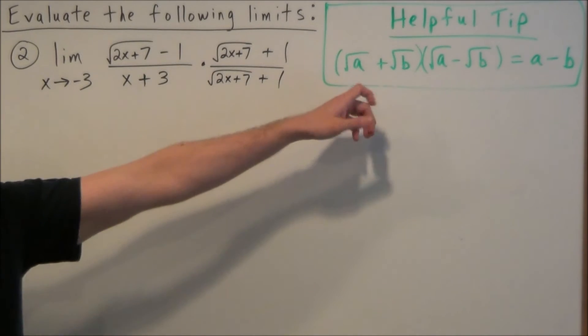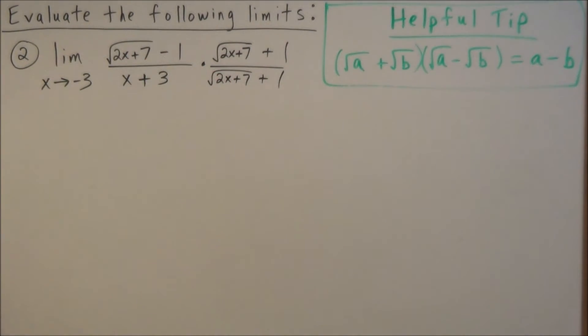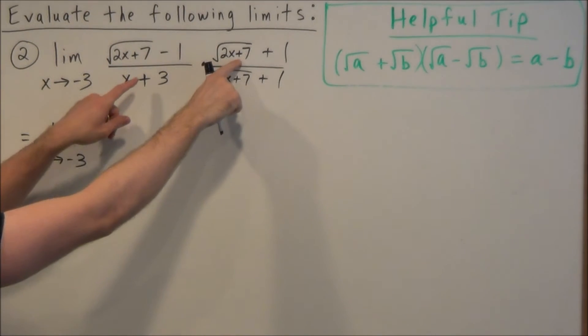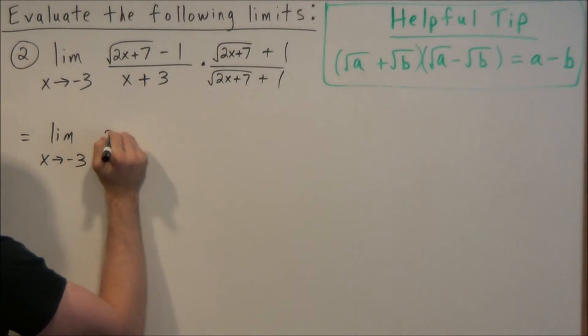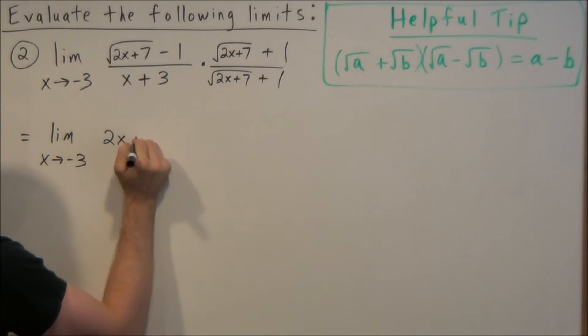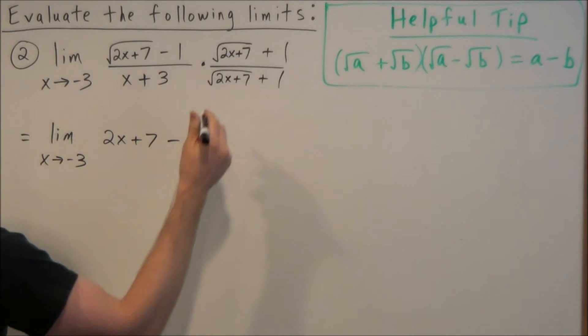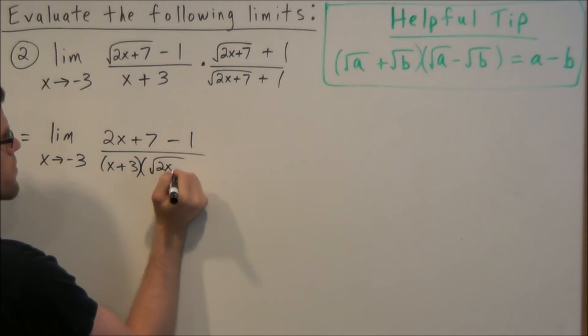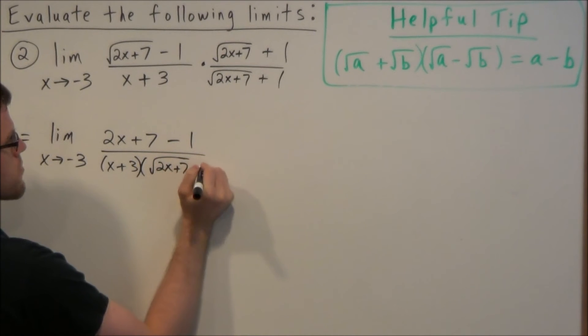Now once again, this helpful tip should help us simplify the numerator somewhat fast. That this is going to be the limit as x approaches negative 3, and when we multiply these two radicals together, we're going to get radical 2x plus 7 times radical 2x plus 7 is just 2x plus 7. And now we have minus 1 times 1 is just 1, over, and we're going to leave the denominator in factored form. We're not going to multiply those two together, because remember, it's only going to overcomplicate this, and nothing will cancel if we do.